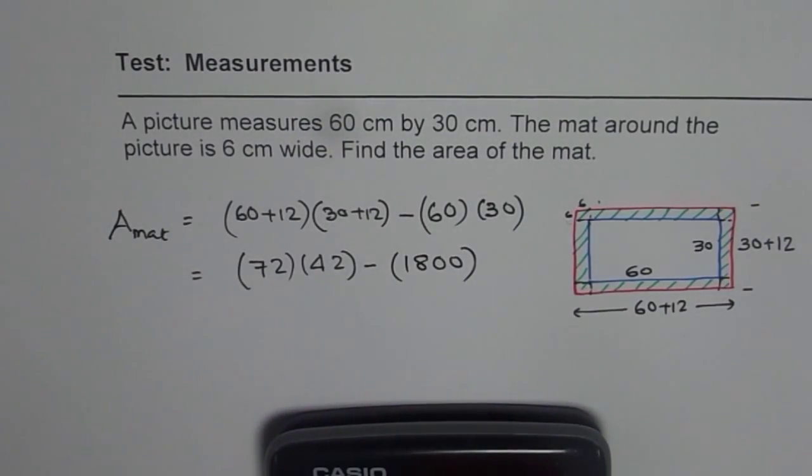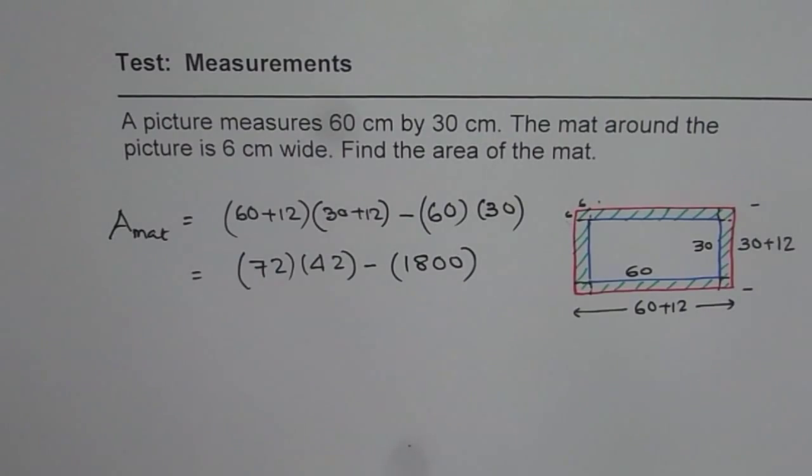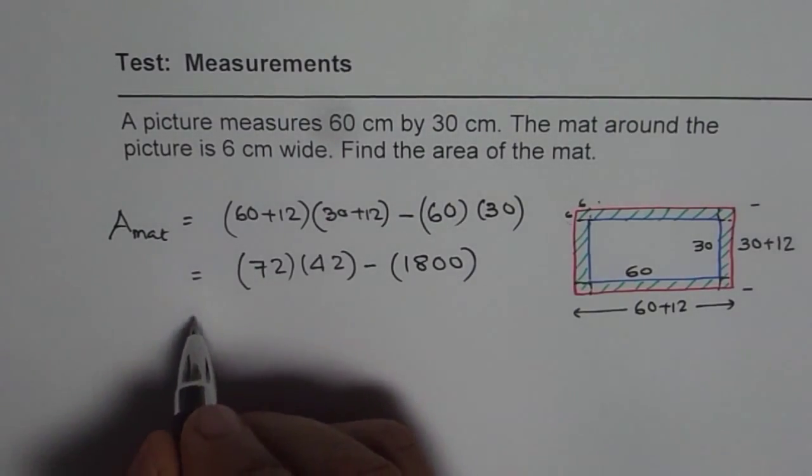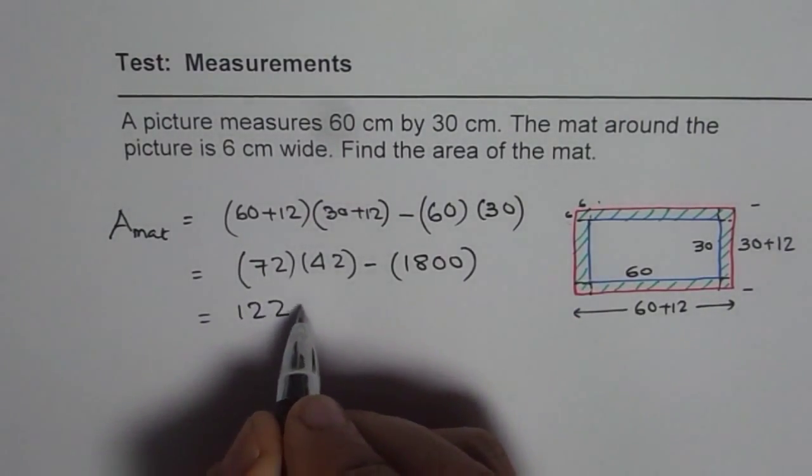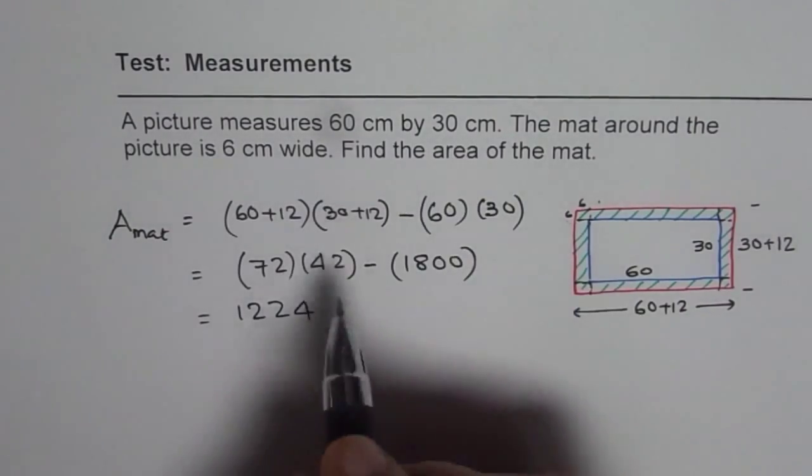So we have 72 times 42 take away 1800 which is 1224. So we get the answer as 1224 and the units are centimeters square.